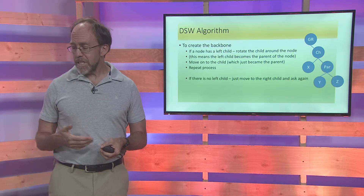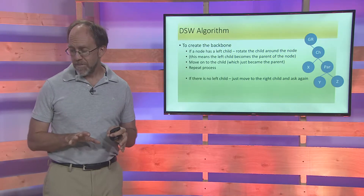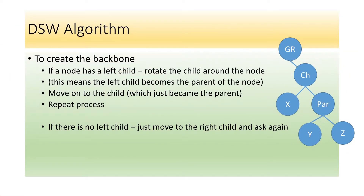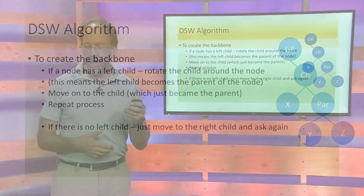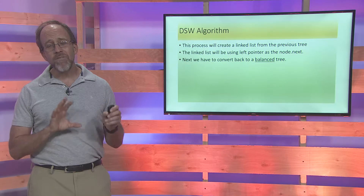Step two: now we take the backbone and put it back into a balanced tree. The steps of the backbone are straightforward — you repeat the same process over and over until you get a perfectly straight backbone of right pointers. You could also do this all on the left — it works the same way, though you'd make different choices when putting it back together. Next, we convert this linked list back into a tree using a series of rotate lefts.